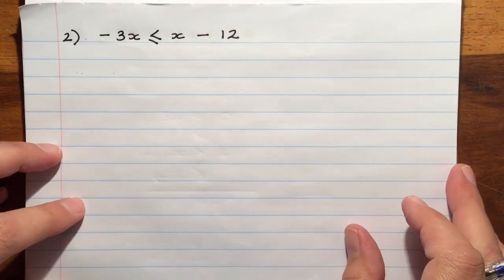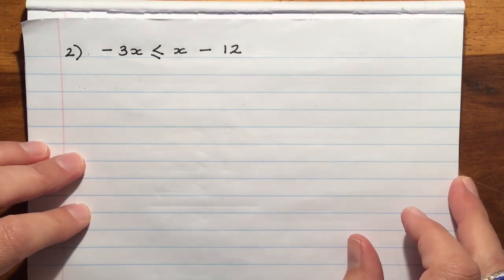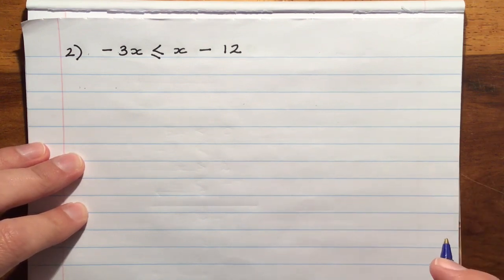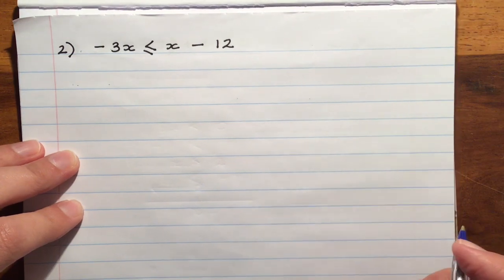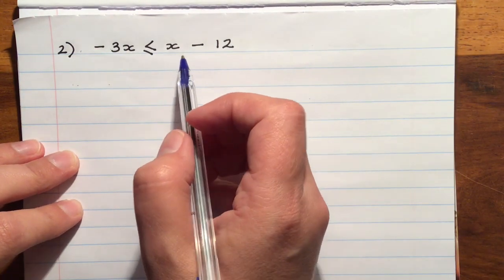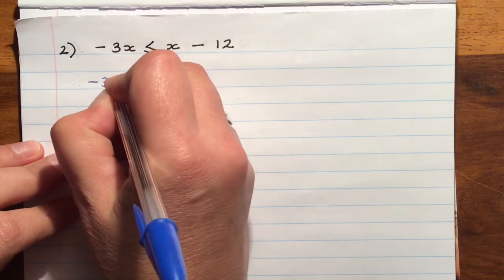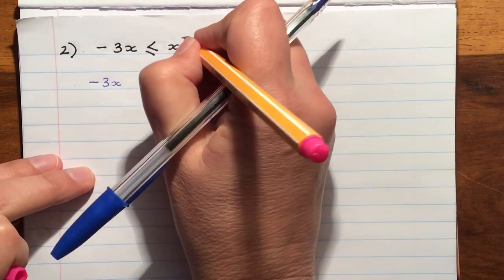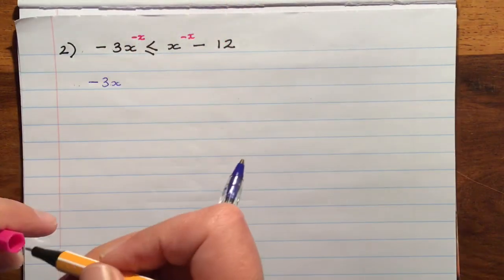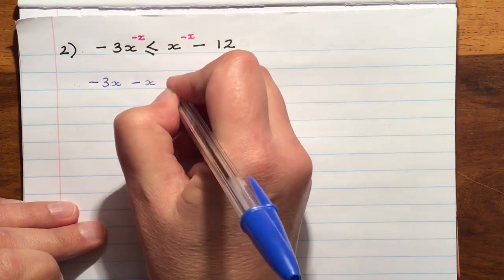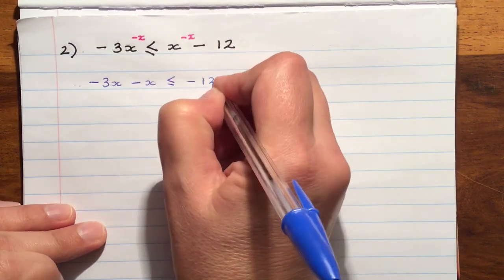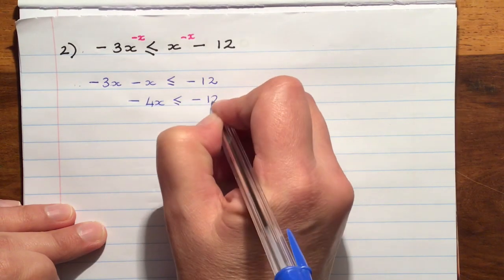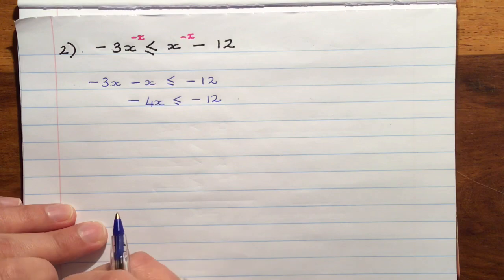Number 2 we have negative 3x is less than or equal to x minus 12. We've got x's on both sides of the equation and we can still try and isolate the x on the left-hand side so we can subtract x from both sides. So that will give us negative 4x which is less than negative 12.